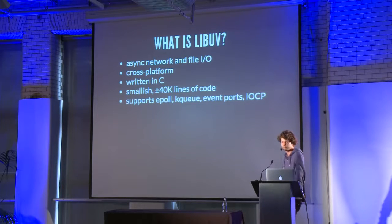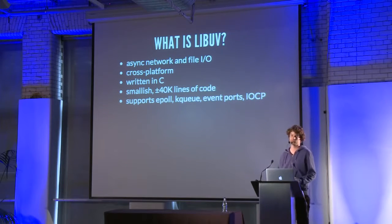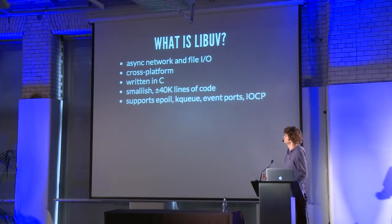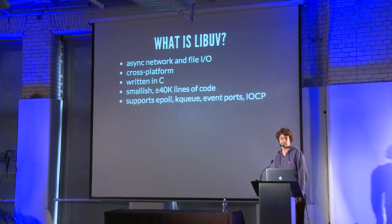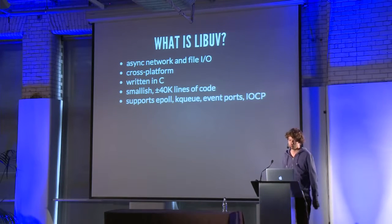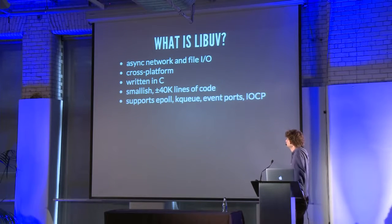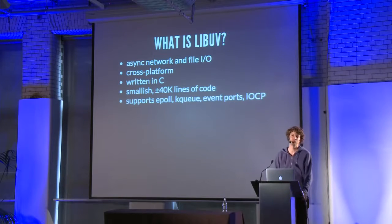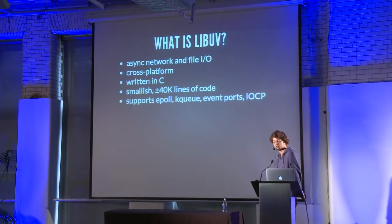For the things it does, it's fairly small — about 40,000 lines of code. Almost half of those are tests, so the actual library is just over 20,000 lines of code. It supports all the major APIs: ePoll on Linux, KQ on the BSDs and OSX, event ports on Solaris, IOCP on Windows, and if you have an AIX machine or HP-UX, it will use select or poll.